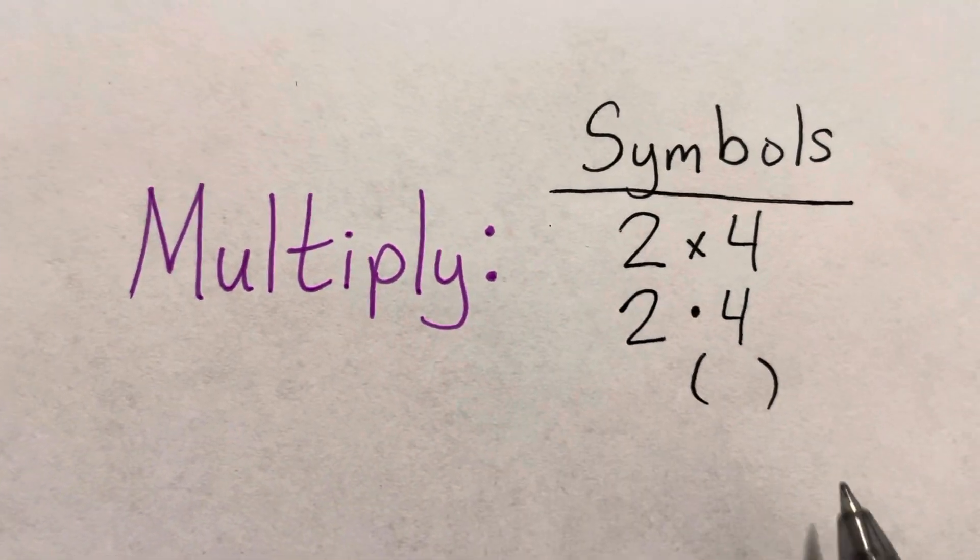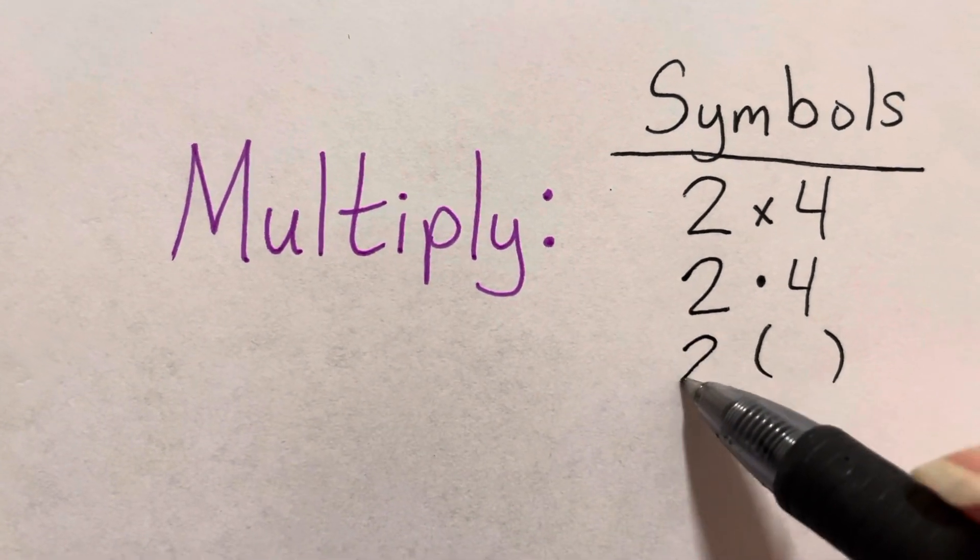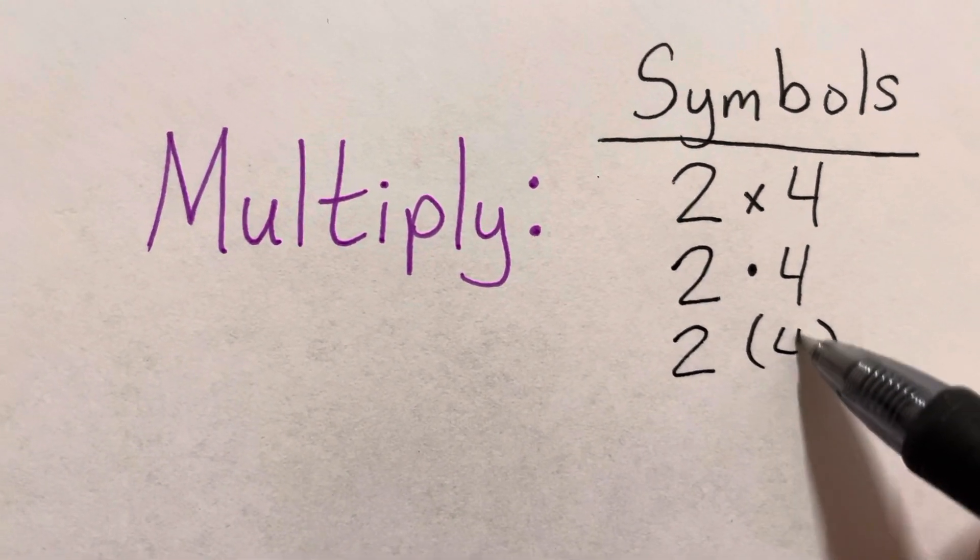And sometimes you might even see parentheses. So it might look something like 2 parentheses 4.